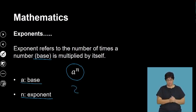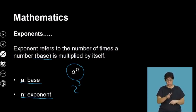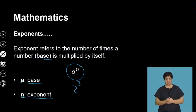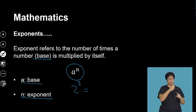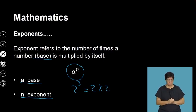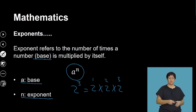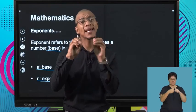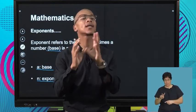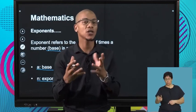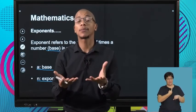For example, if I have 2 to the exponent of 3, the 2 is my base and the 3 is how many times I'm going to multiply the base by itself. So that will be 2 multiplied by 2 multiplied by 2 — three times. Please don't think that means 2 multiplied by 3. No, it's 2 multiplied by itself 3 times. That's what an exponent is about.